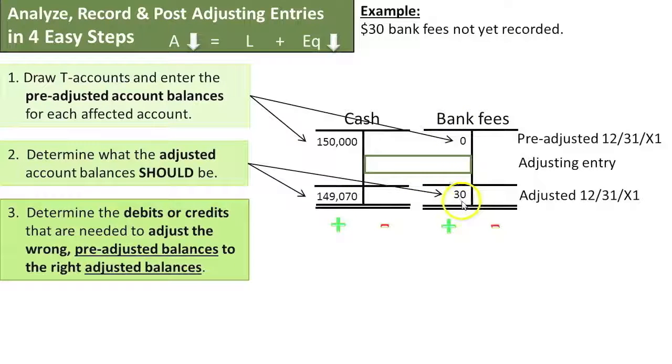Bank fees need to be increased $30, and cash needs to be reduced $30. I've indicated below each of the T-accounts what side is the plus side and what side is the minus side for each. Cash is increased with debits and decreased with credits, and bank fees are increased with debits and decreased with credits. A debit to bank fees will increase bank fees to $30, and a credit to cash will decrease cash $30.